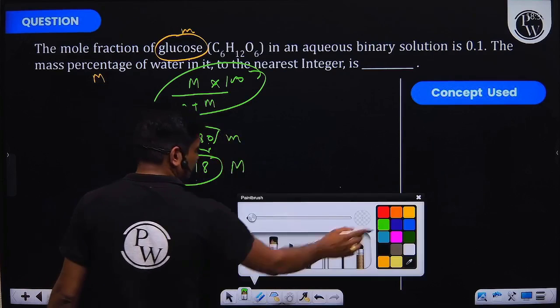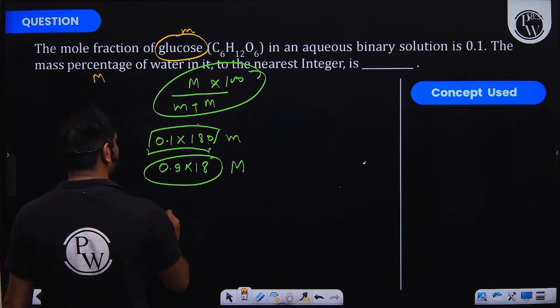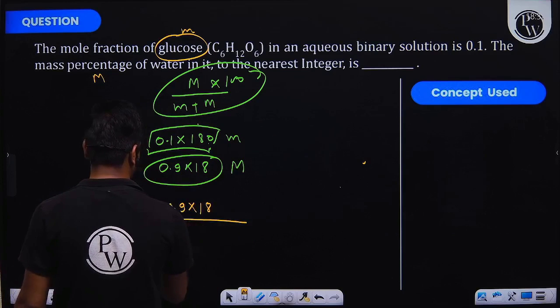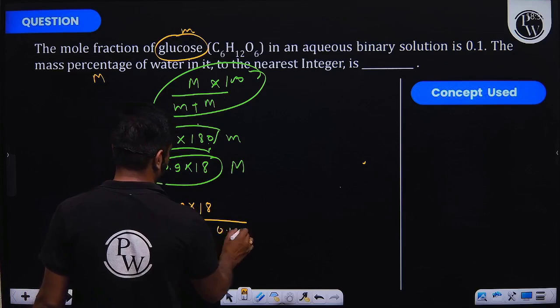By putting the values simply, 0.9 times 18 in the numerator, and here we can say 0.9 times 18 plus 0.1 times 180 in the denominator, times 100.